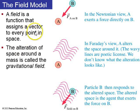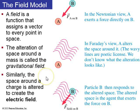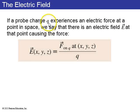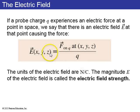So a field is, mathematically it's a vector assigned to every point in space. The alteration of space around a mass is called a gravitational field. The alteration of space around an electric charge is called the electric field. So if you have a probe charge, lowercase q, experiences an electric force at some point in space, we say that there's an electric field E causing that force. So the force on little q divided by q is defined as the electric field. The units are newtons per coulomb, and the magnitude E of the electric field is called the electric field strength.